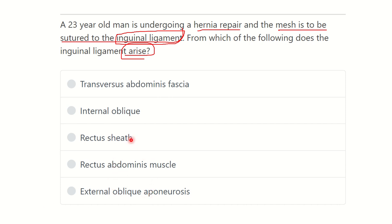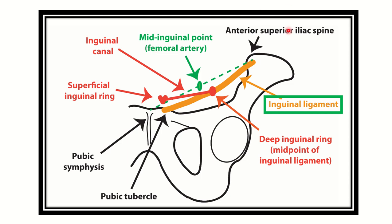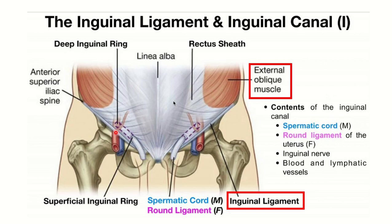Here we can see the inguinal ligament. It attaches from the anterior superior iliac spine to the pubic tubercle. We can also see the superficial inguinal ring and the deep inguinal ring associated with this ligament.